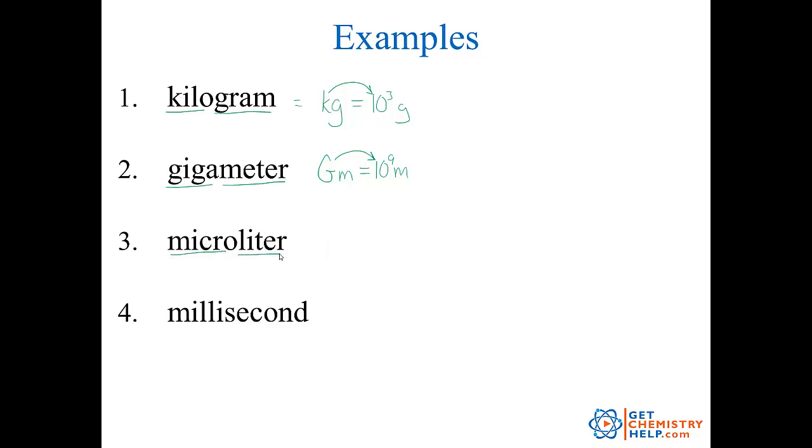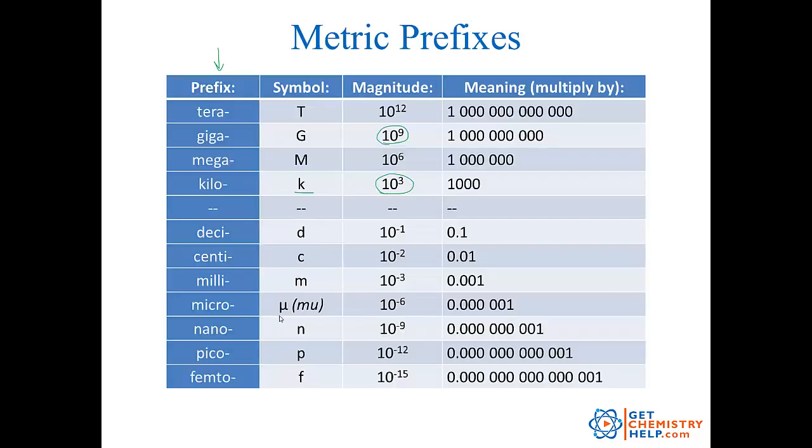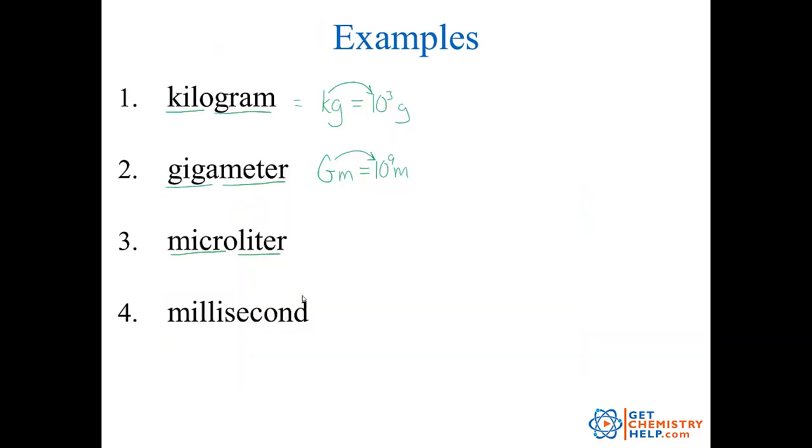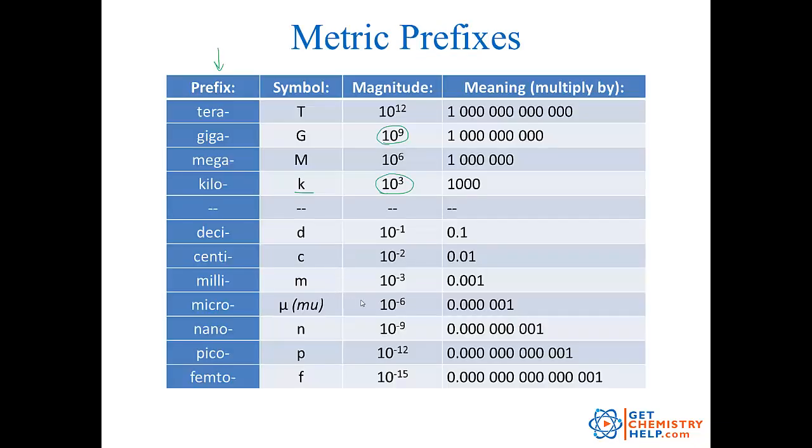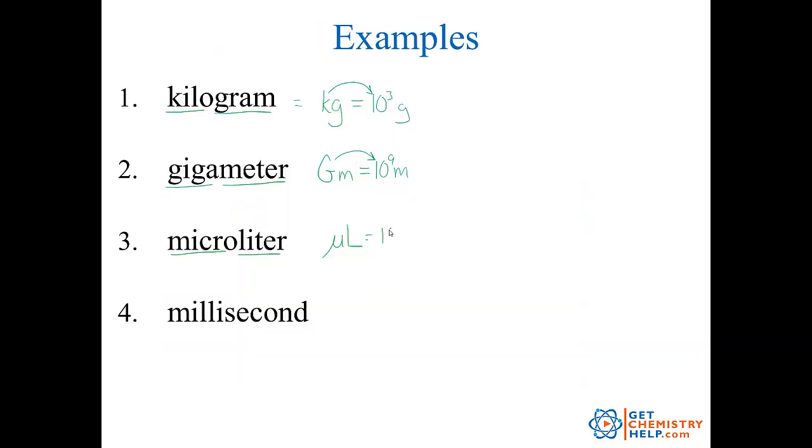How about microliter? Okay, micro has an interesting prefix. It's based off the lowercase Greek letter mu, and it looks kind of like a U with an extra long tail. So microliter. Micro is this U with the extra long tail. Liter is capital L. Microliter. What does micro mean? Oh, micro means ten to the negative sixth. So microliter is ten to the negative sixth liters.